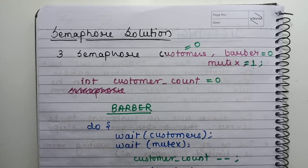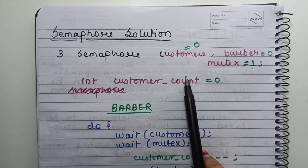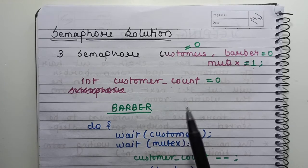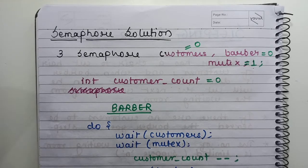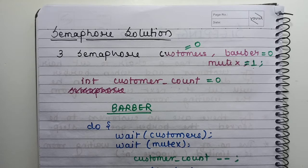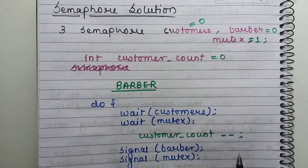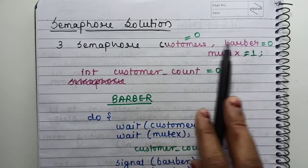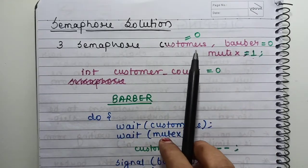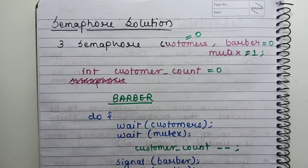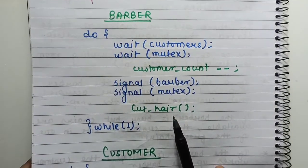This is similar to the Producer-Consumer problem with a counter variable, which we discussed in the previous video. The customer count will be incremented by the customer when they arrive and decremented by the barber when it takes a customer from the waiting room — because then one seat becomes available again. Let's now see how we implement this.